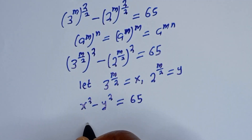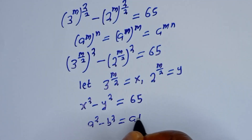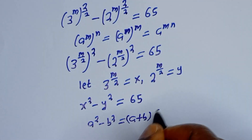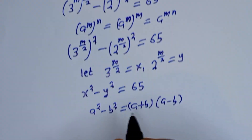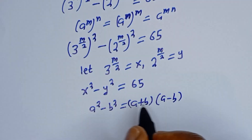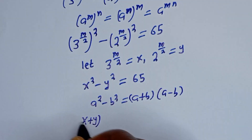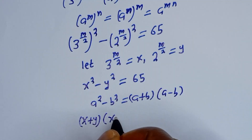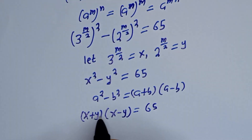From here we apply the difference of squares: a squared minus b squared equals (a plus b)(a minus b). Here a is equal to x and b is equal to y. So you have (x plus y)(x minus y) is equal to 65.